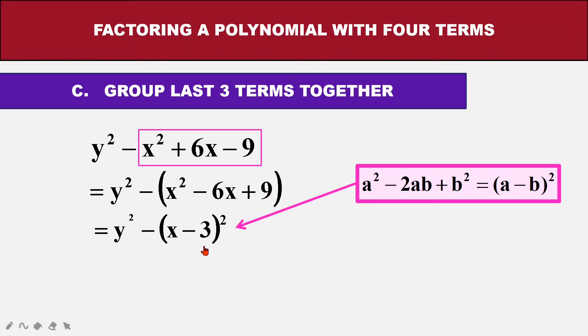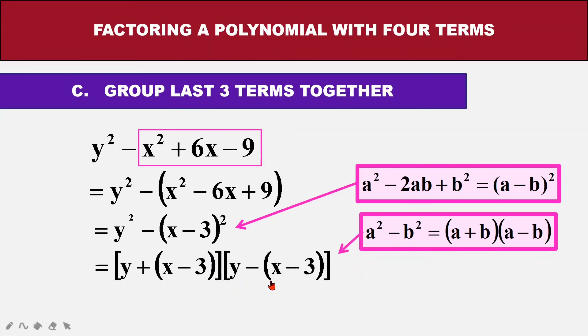Once that is done, again, this looks like A squared minus B squared. So I can put this as A as Y and my B as X minus 3. So I will put it in the case like this. And my factors is ready.